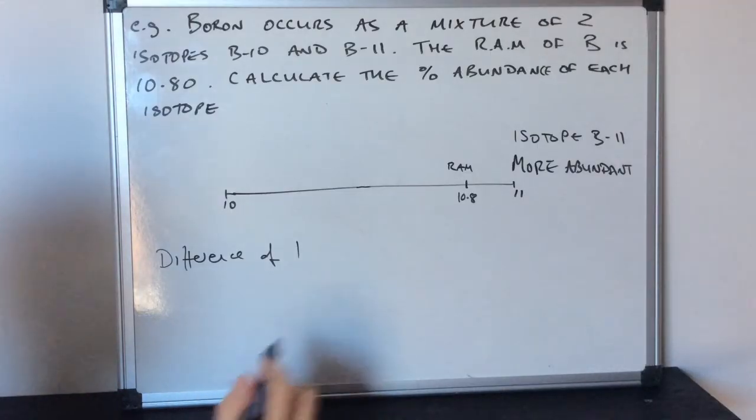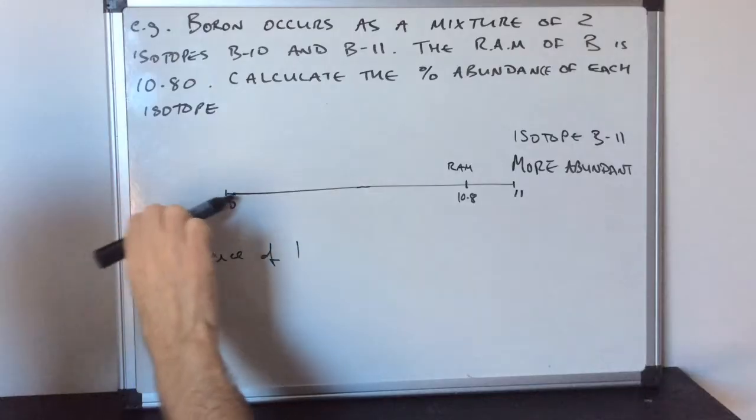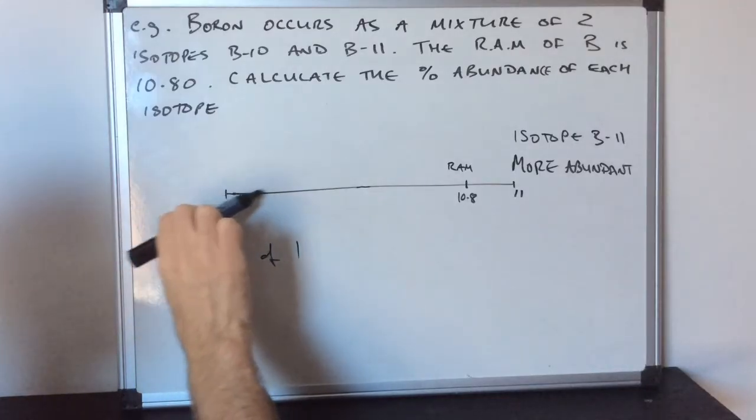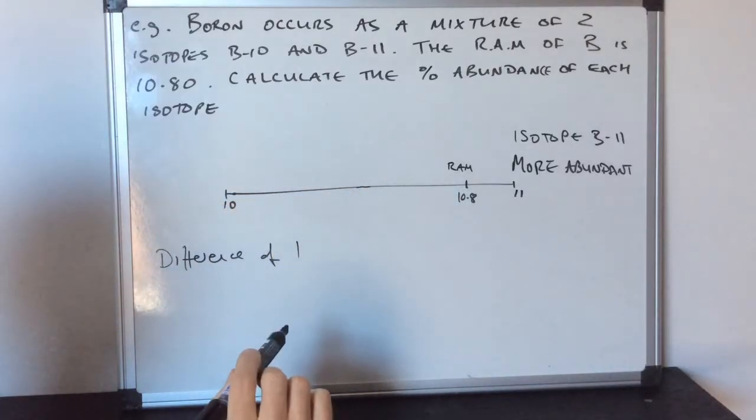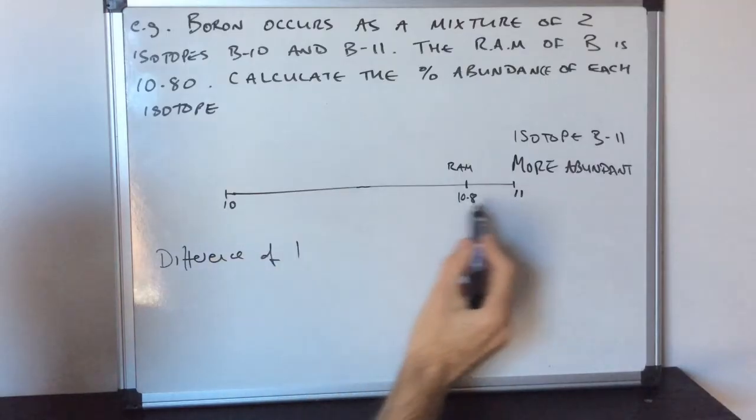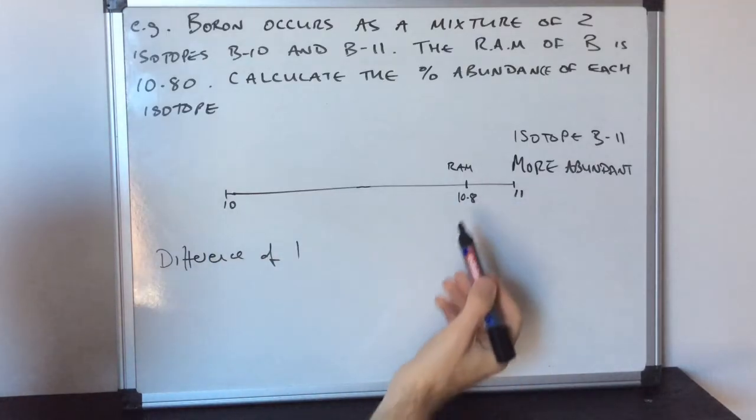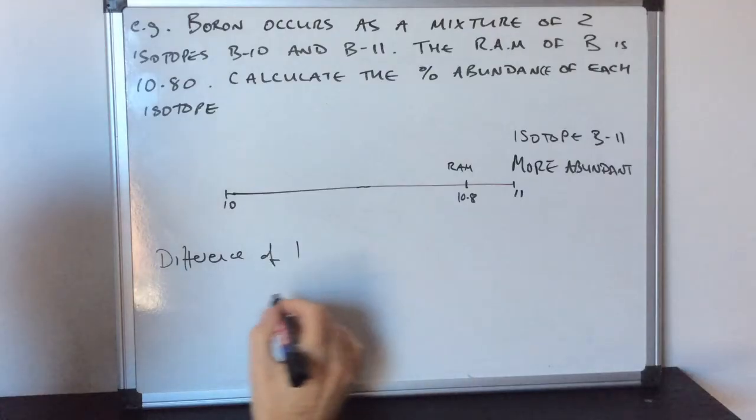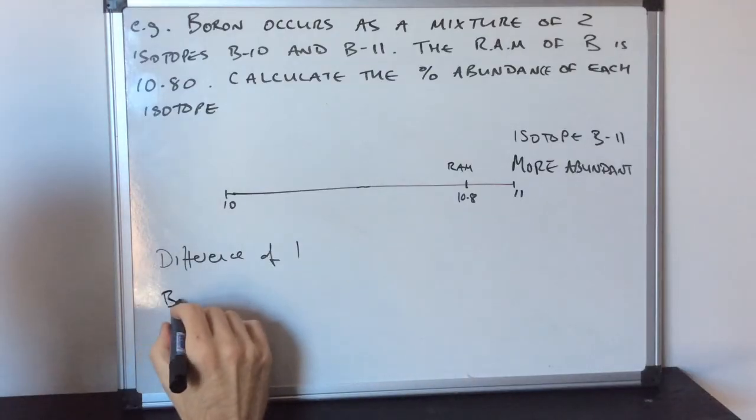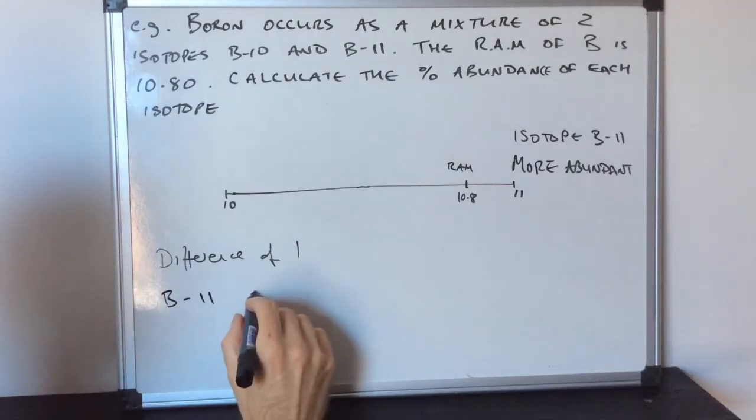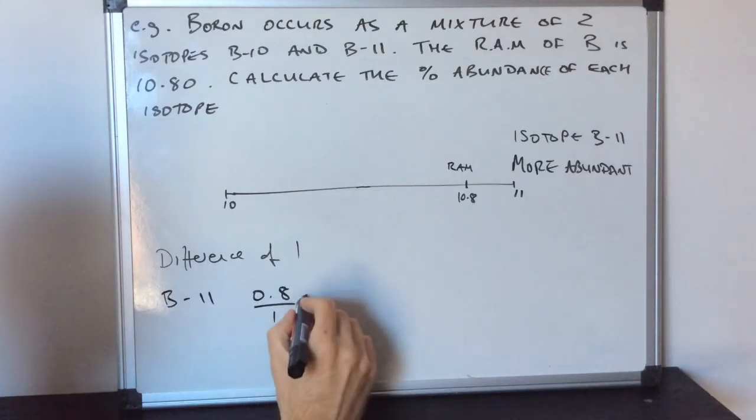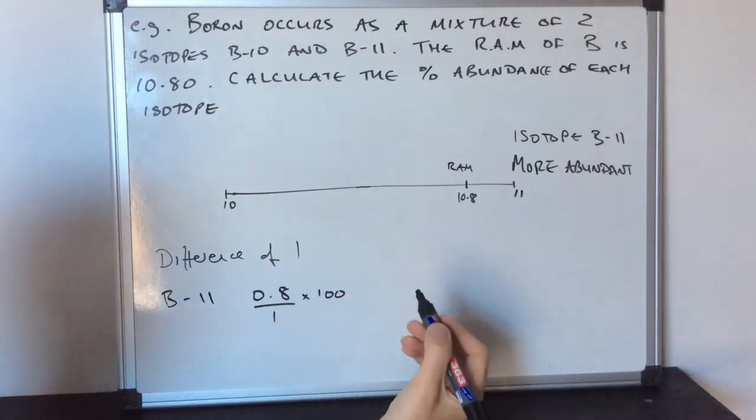The way I do that is isotope 11 is pulling from all the way from here to there. The difference between these is one. It's pulling with 0.8. So the B-11 is pulling 0.8 of that one, and to turn it into a percentage, multiply by 100.